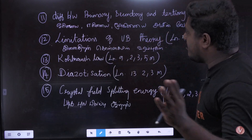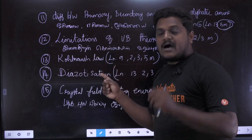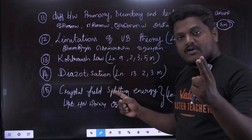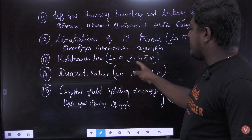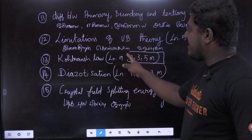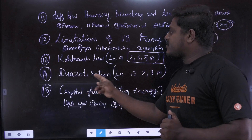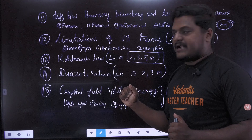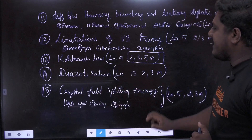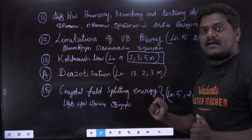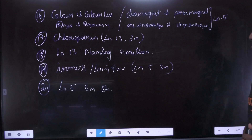In the cold rush law it is 2 mark, 3 mark, 5 mark — this is the ultimate question. Diazotization. Crystal field splitting energy — this is the second question, the second student is going to spread it.